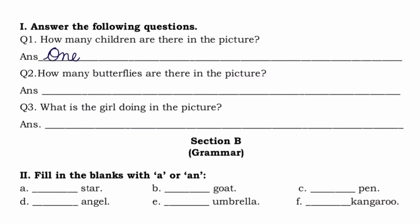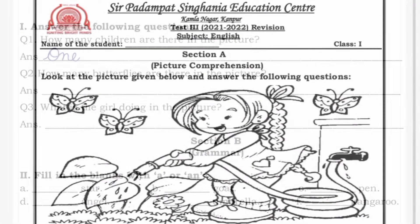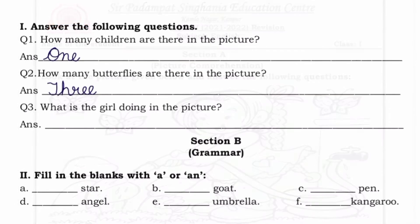So now let us move to the second question: how many butterflies are there in the picture? Let's see the picture once again. So how many butterflies are there? 1, 2 and 3. So the answer for this question will be 3 butterflies.